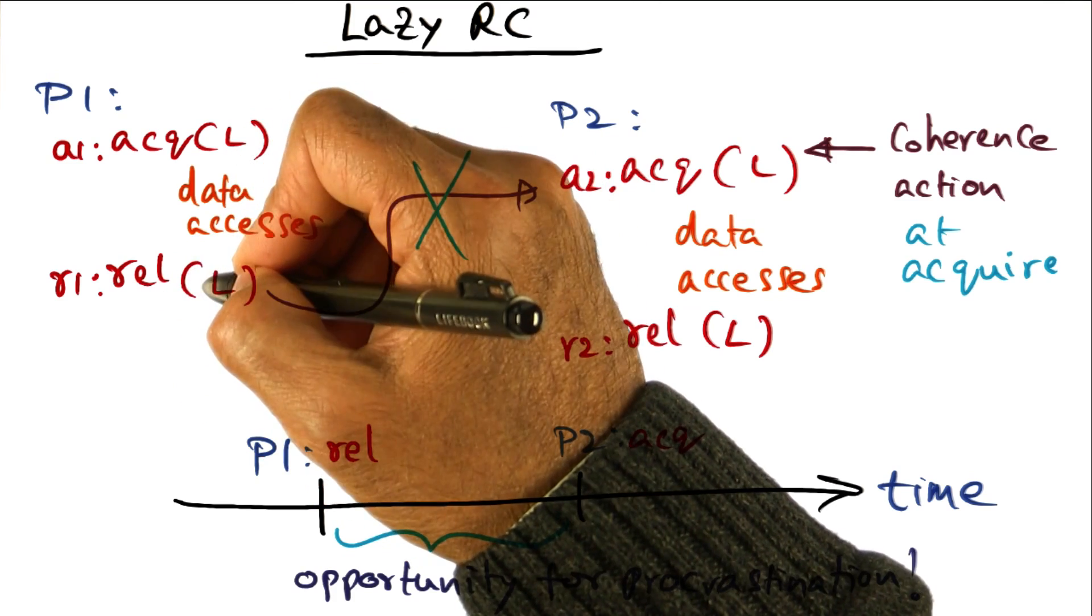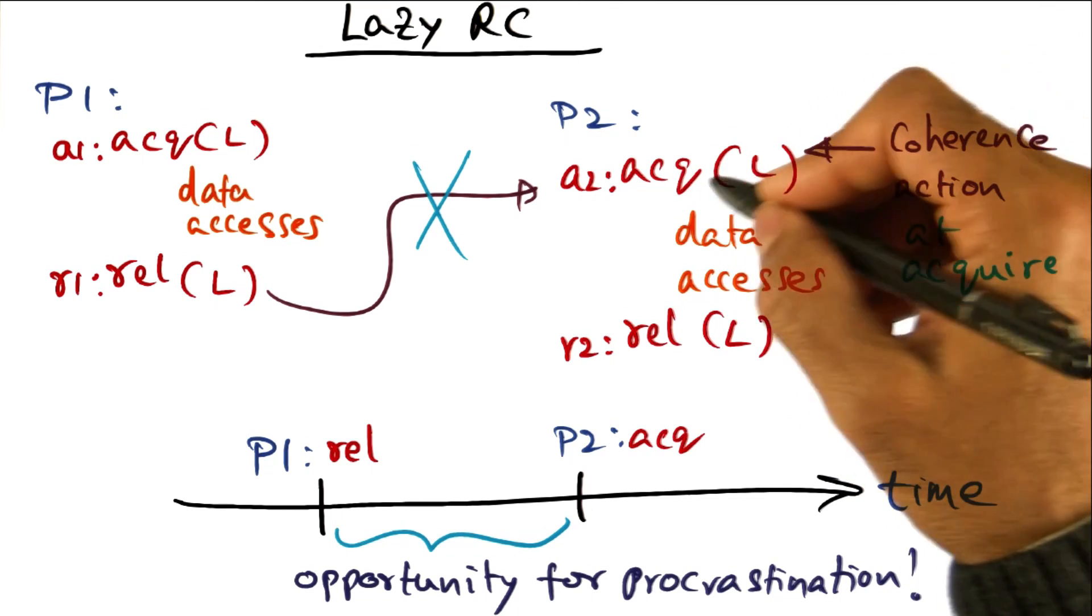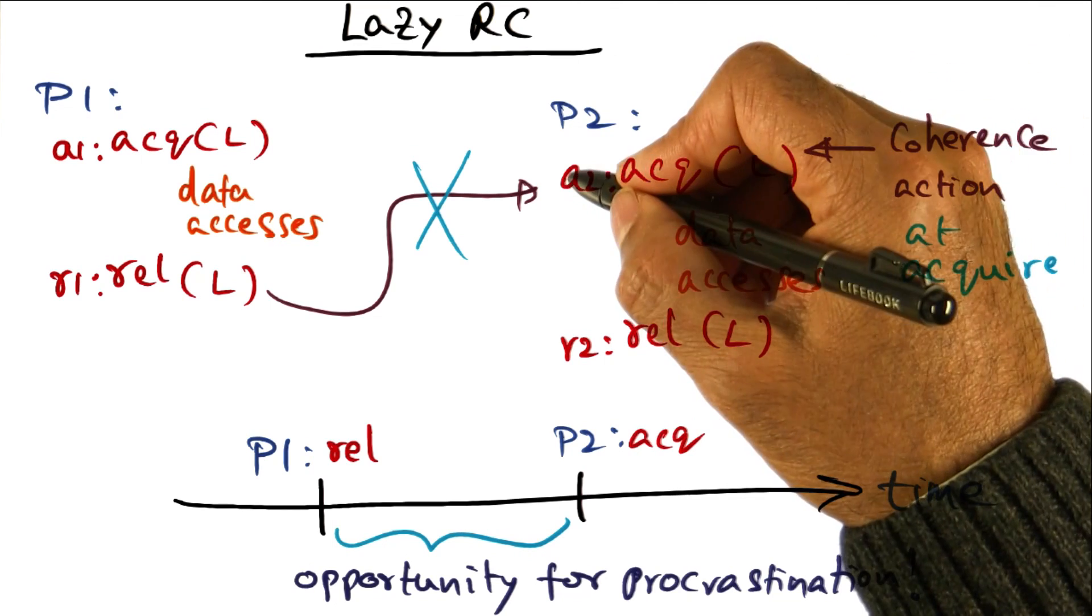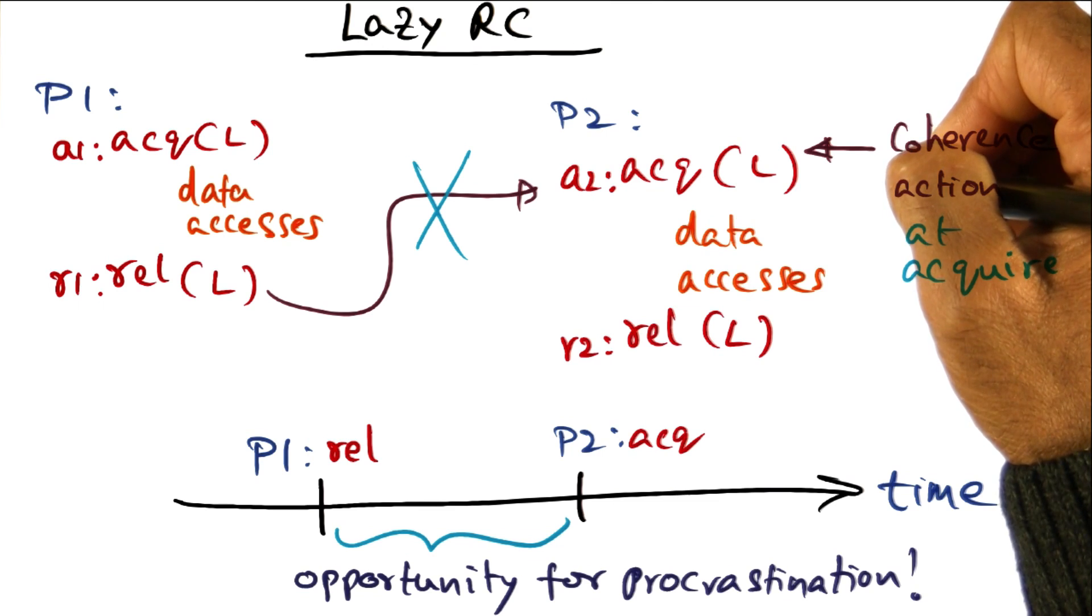go ahead, release the lock. But if the next lock acquisition happens, at that point make sure that all the coherence actions are complete.